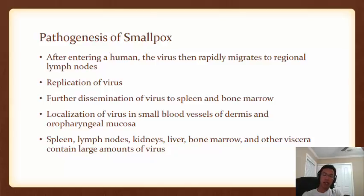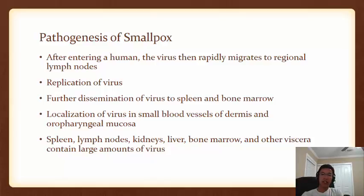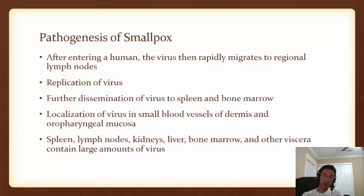After the virus has replicated sufficiently, it further disseminates into the spleen and bone marrow. The virus then begins to localize in the small blood vessels of the dermis and oropharyngeal mucosa, allowing it to spread into even more tissue. By the end of this process, the spleen, lymph nodes, kidneys, liver, bone marrow, and other viscera will contain large amounts of the virus.